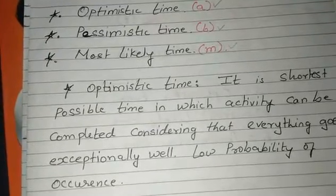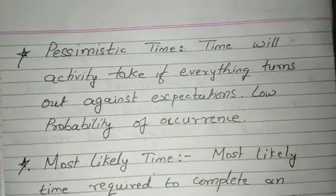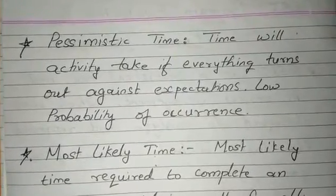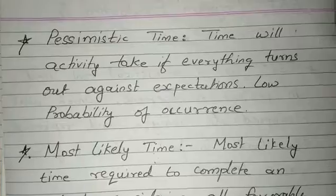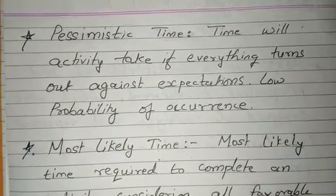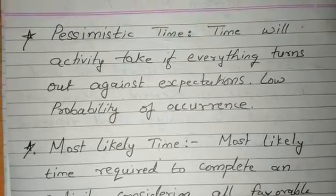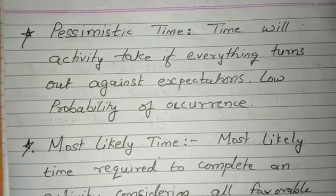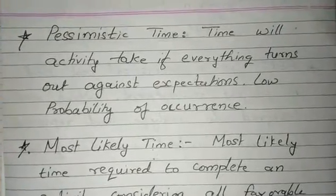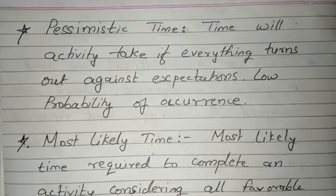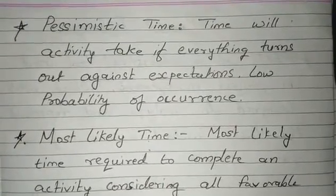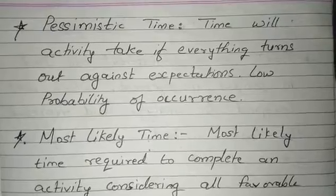The second is Pessimistic Time. Time activity will take if everything turns out against expectations, and again it has low probability of occurrence. Pessimistic means negative. You are thinking the longest time which would be taken when circumstances will not favor your project, but you will still try to complete the project. So it is considered as pessimistic time.